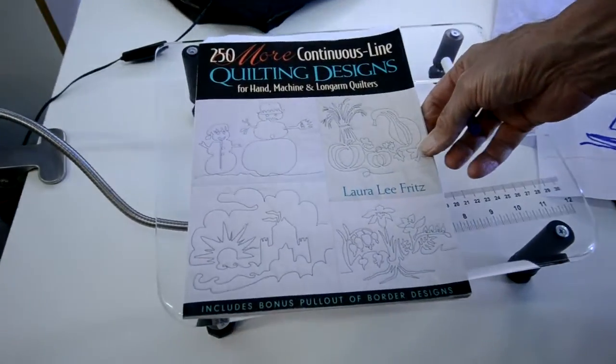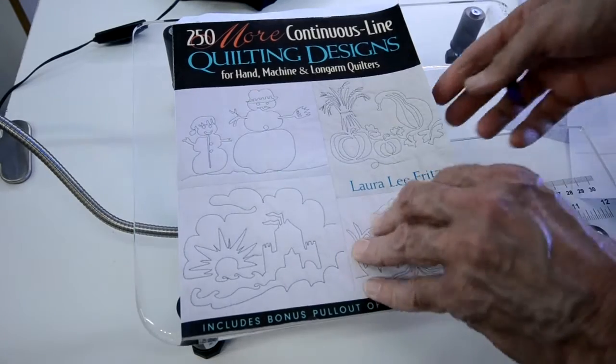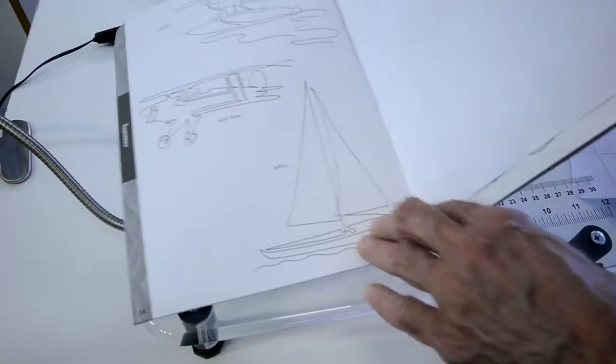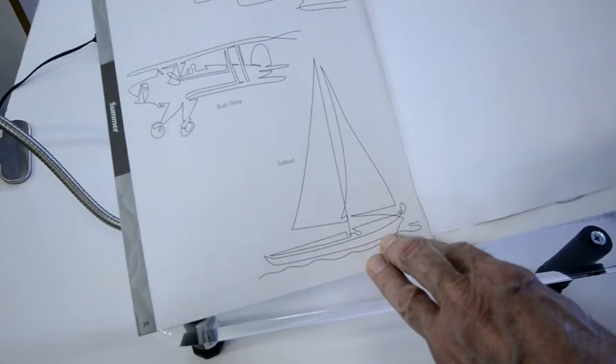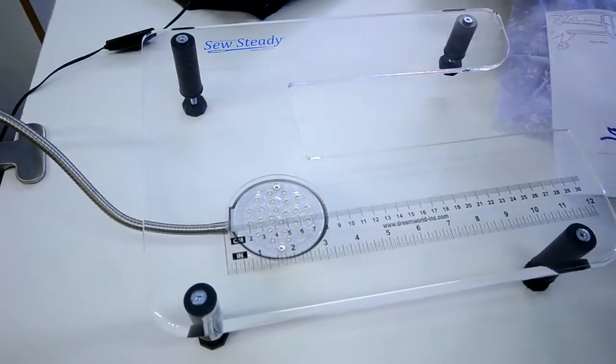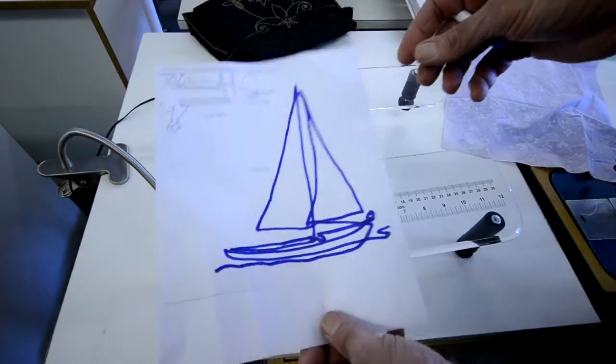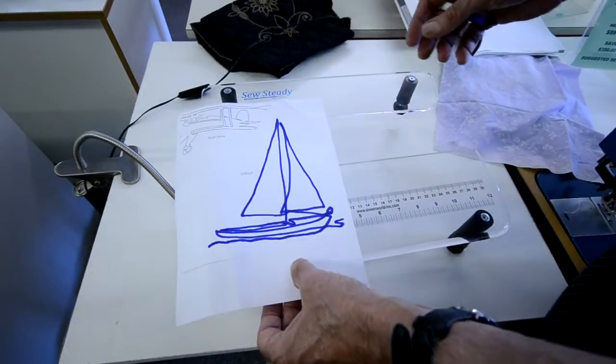This is some basic continuous line quilting. I took designs from Laura Lee Fritz's book and enlarged one of them. Then I took the design and covered it with a pen so it would be easier to read.